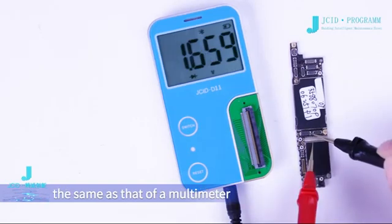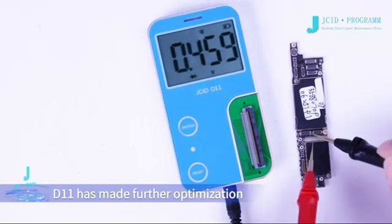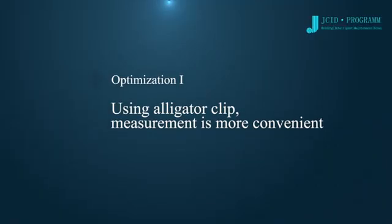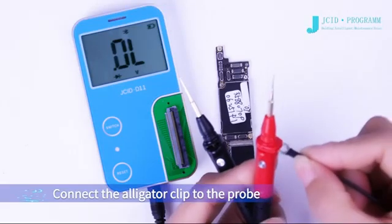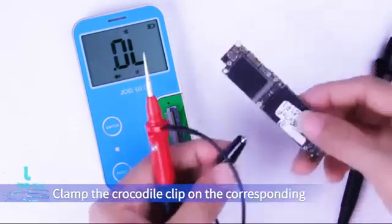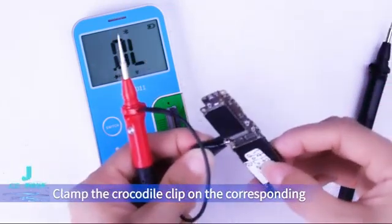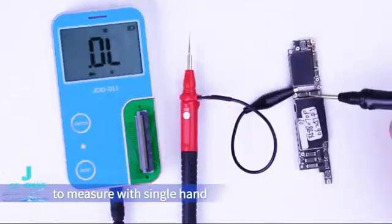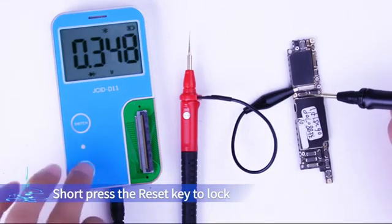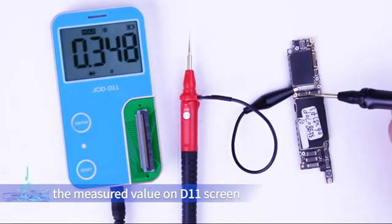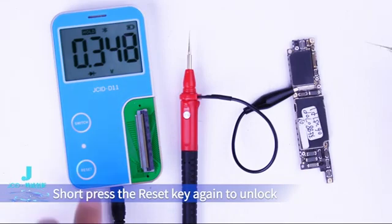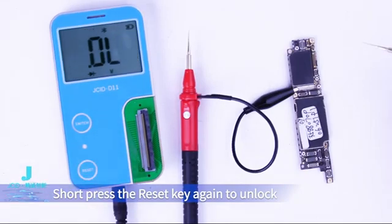This measurement method is the same as that of a multimeter. D11 has made further optimization. Connect the alligator clip to the probe, clamp the crocodile clip on the corresponding grounding position of the motherboard to measure with single hand. Short press the reset key to lock the measured value on D11 screen. Short press the reset key again to unlock.